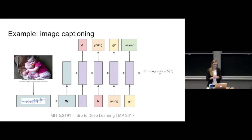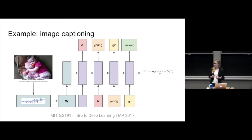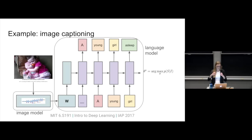Looking more closely at this model: we feed an image into an Inception CNN, which you can pre-train, to create an image embedding. Then we use this image embedding in the same way as the translation model, feeding it as a high-dimensional vector into a language model, which produces a caption using the information stored in the vector. This is again a separation of different modalities combined at a higher level.